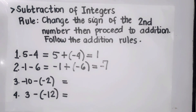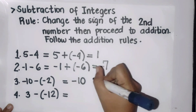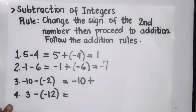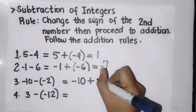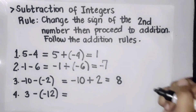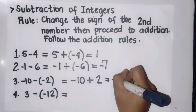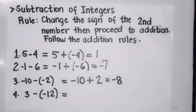Third example: negative ten minus negative two. Copy negative ten, proceed to addition, and change the sign of the second number — negative two becomes positive two. Since they have different signs, proceed to subtraction of their absolute values: ten minus two is eight. Since negative ten has a larger absolute value than positive two, our final answer copies the sign — negative. Therefore the answer is negative eight.